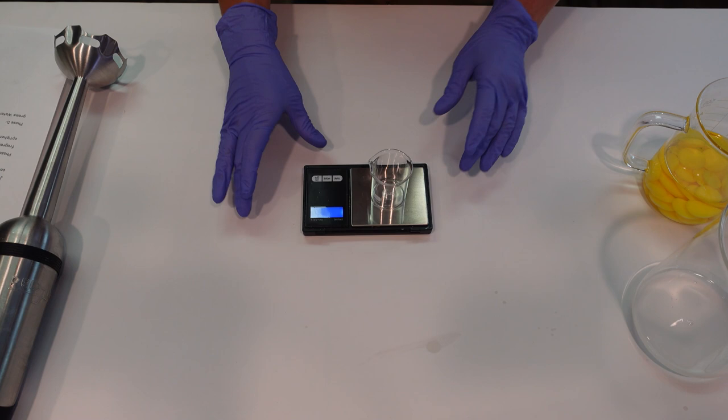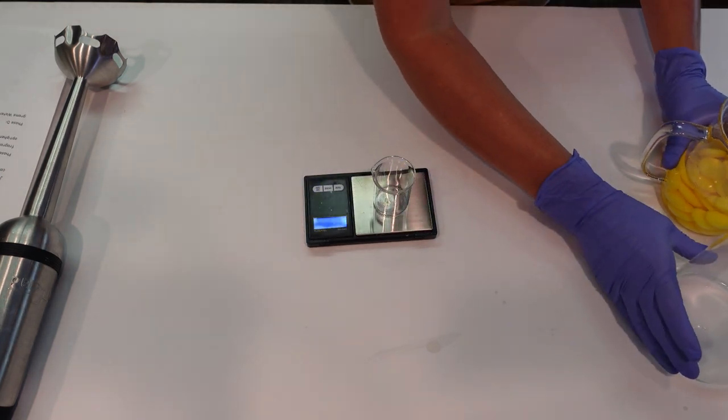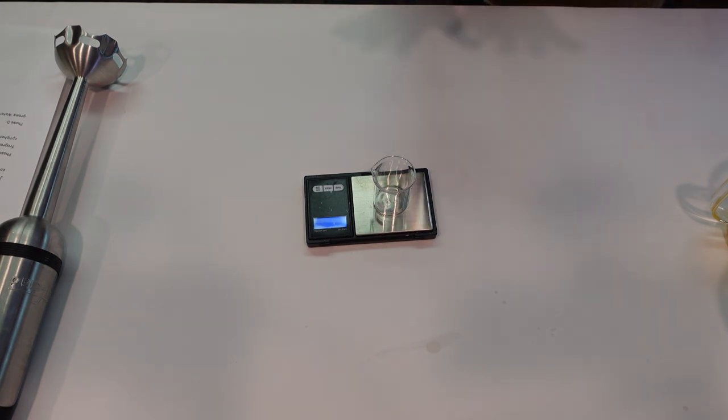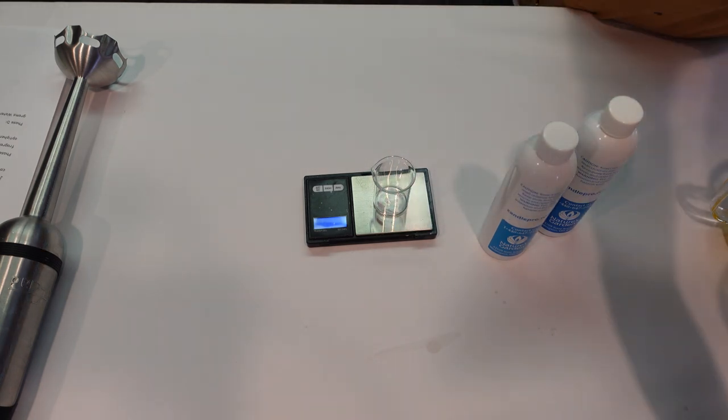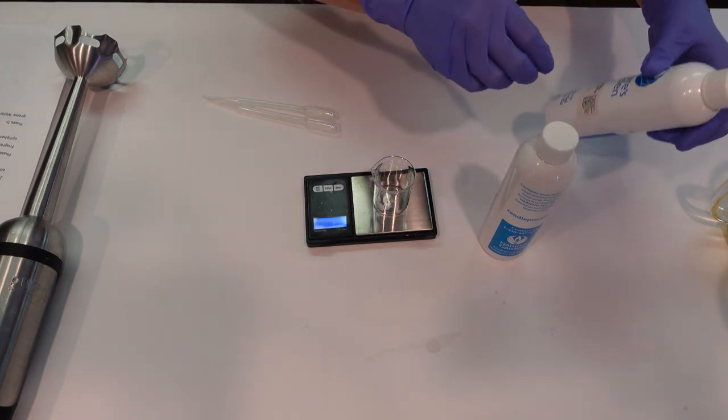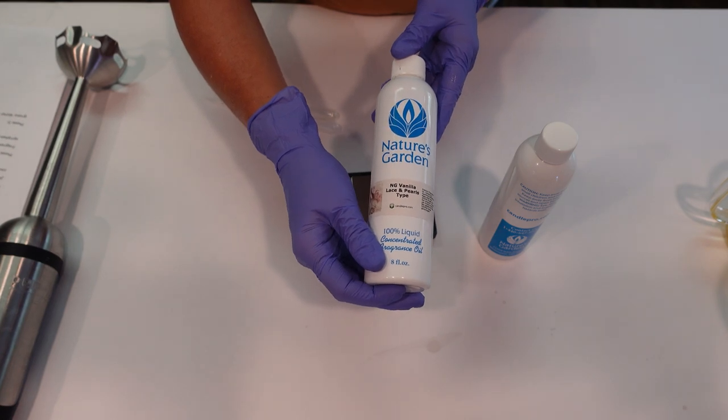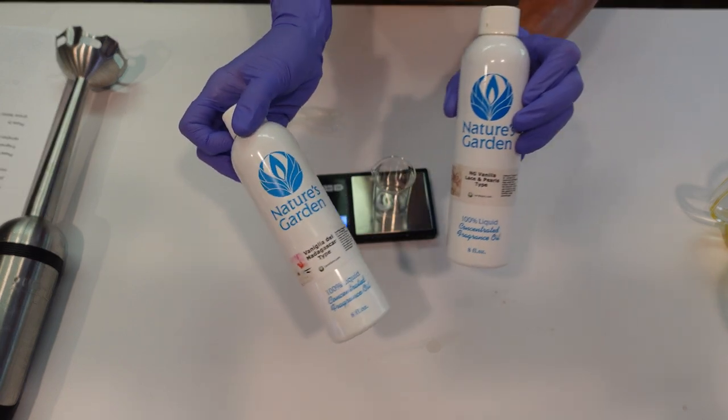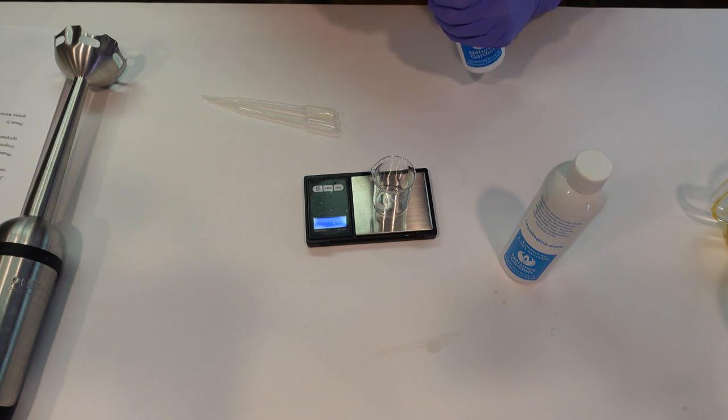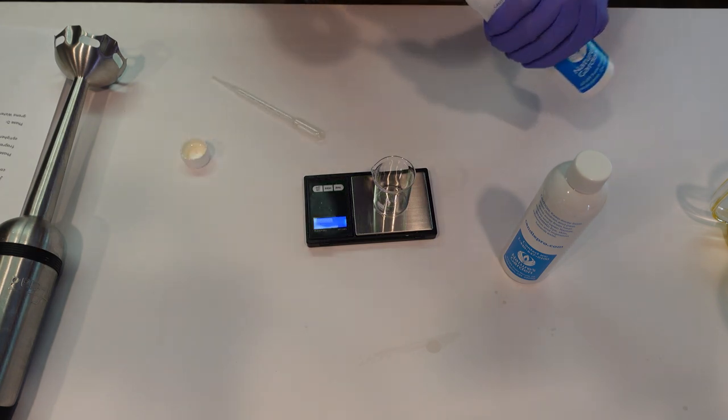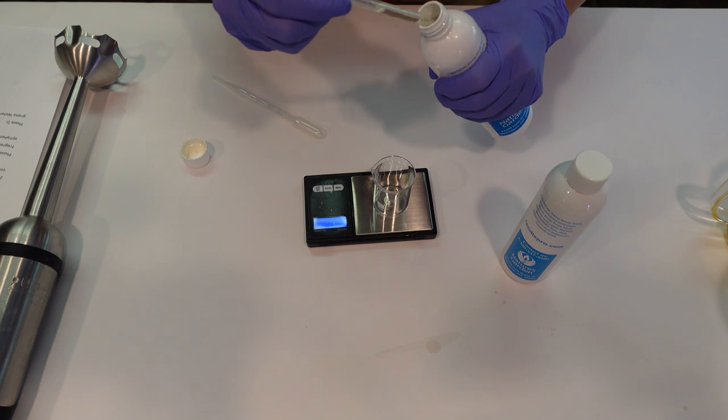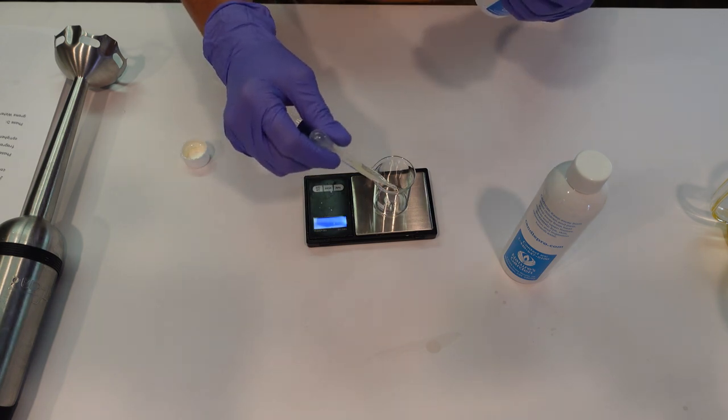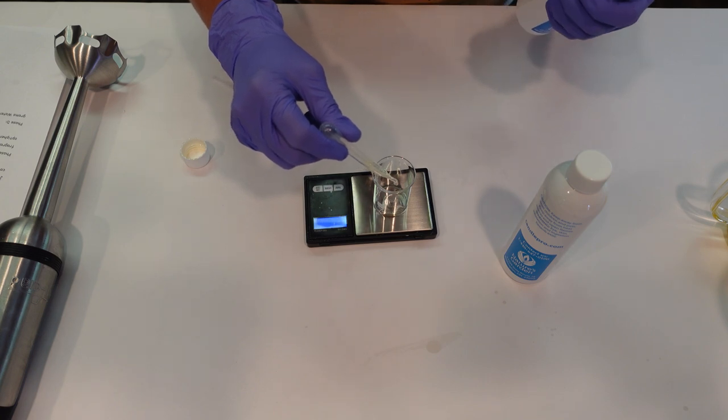The next thing we're going to do is weigh off our Phase C ingredients. Now this will become part of the Phase B ingredients, but we don't want to heat these ingredients up so I have considered them their own little phase here. We're going to go ahead and weigh off our preservative and our fragrance oil. I'm using a combination of Nature's Garden Vanilla Lace and Pearls and also Nature's Garden Vanilla Madagascar Type. I'm just using my own little combination here of the two. It smells very... Vanilla Lace and Pearls is my favorite vanilla, but the Madagascar Type adds a unique kind of leathery note to it.